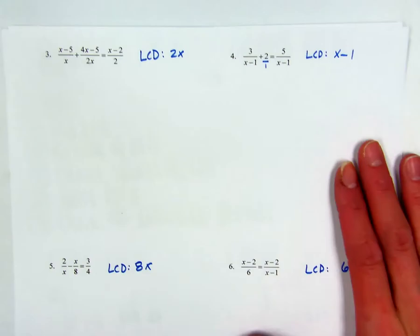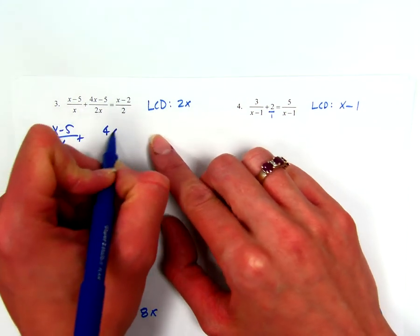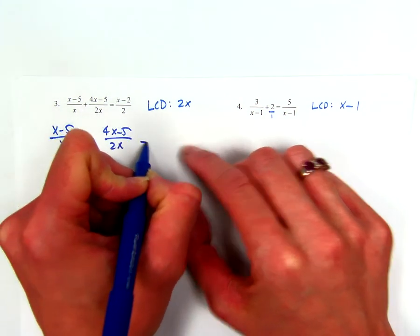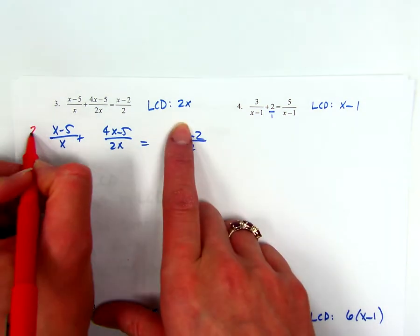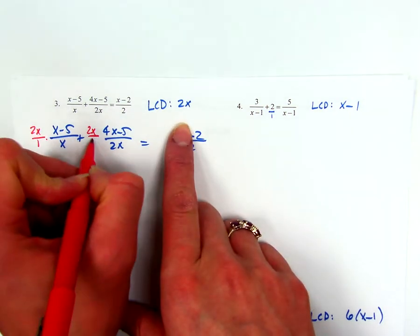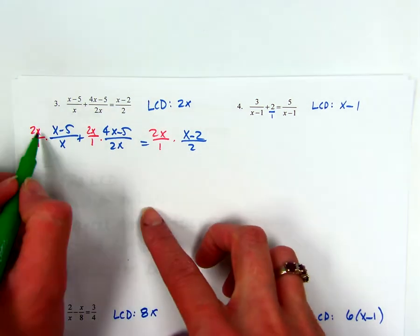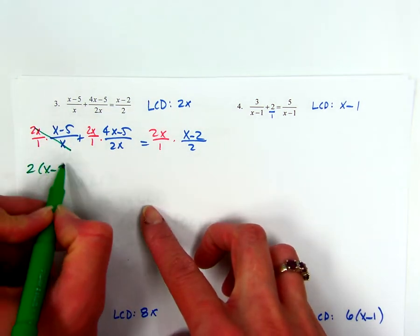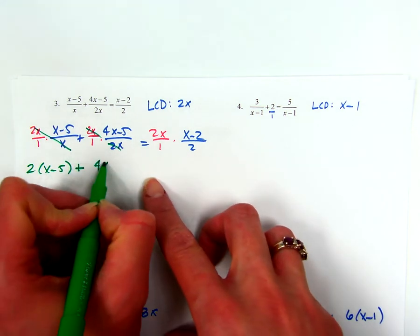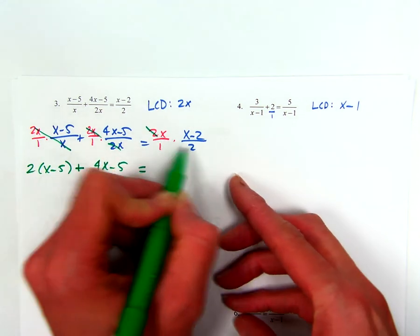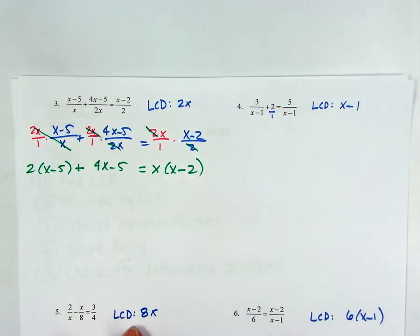All right, so we're going to set up our equation. We'll just leave a little bit of space. All right, my LCD is 2X. So I'm going to multiply each one by that. And you're going to look for things that cancel. So my X's cancel. I'm left with 2 times the quantity X minus 5. Here my 2X's cancel, so I'm left with 4X minus 5. Here only my 2's cancel, so I'm left with X times the quantity X minus 2.